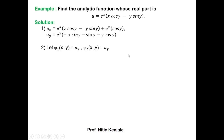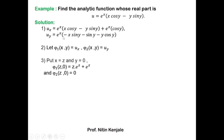Next we let φ1(x, y) = u_x and φ2(x, y) = u_y, then put x = z and y = 0. φ1(z, 0) becomes e^z·(z·cos 0 − 0·sin 0) + e^z·cos 0 = e^z·z + e^z = z·e^z + e^z. For φ2(z, 0), we substitute y = 0: e^z(−x·sin 0 − sin 0 − 0·cos 0) = e^z·0 = 0. So φ2(z, 0) = 0.